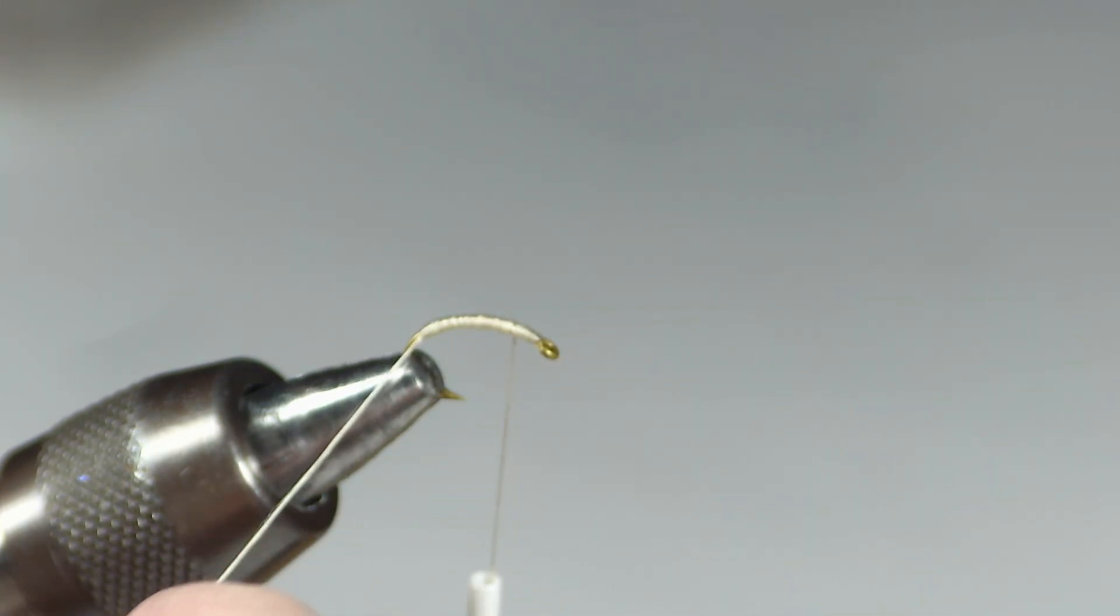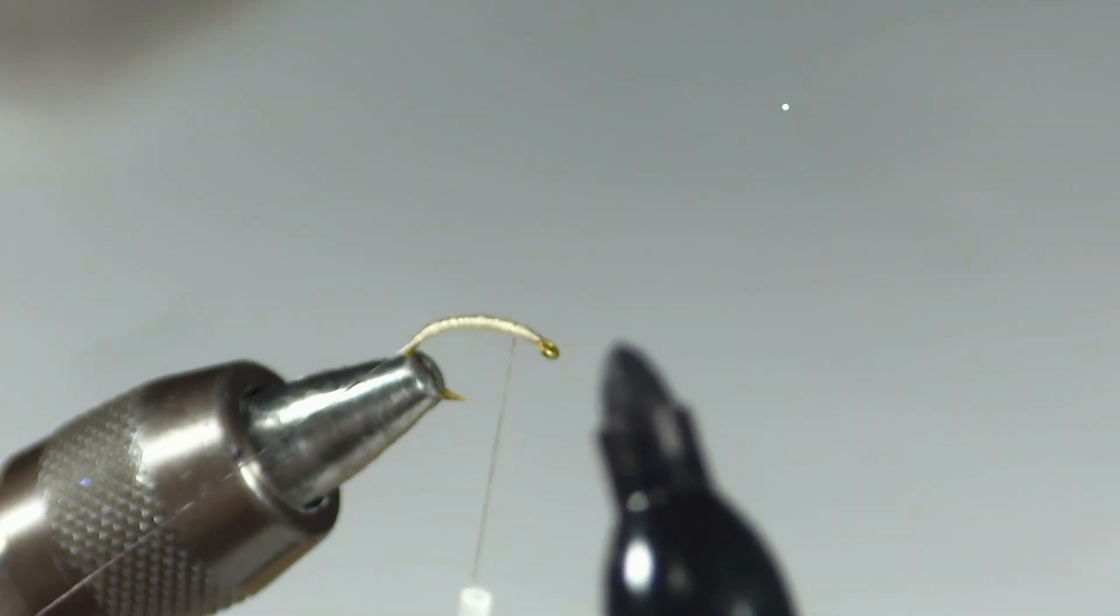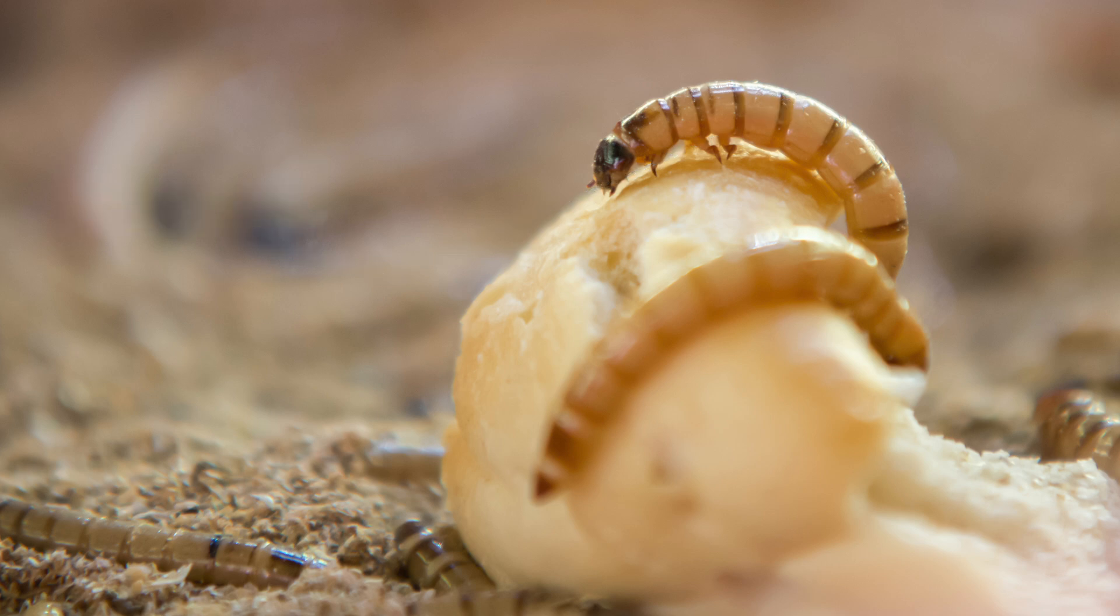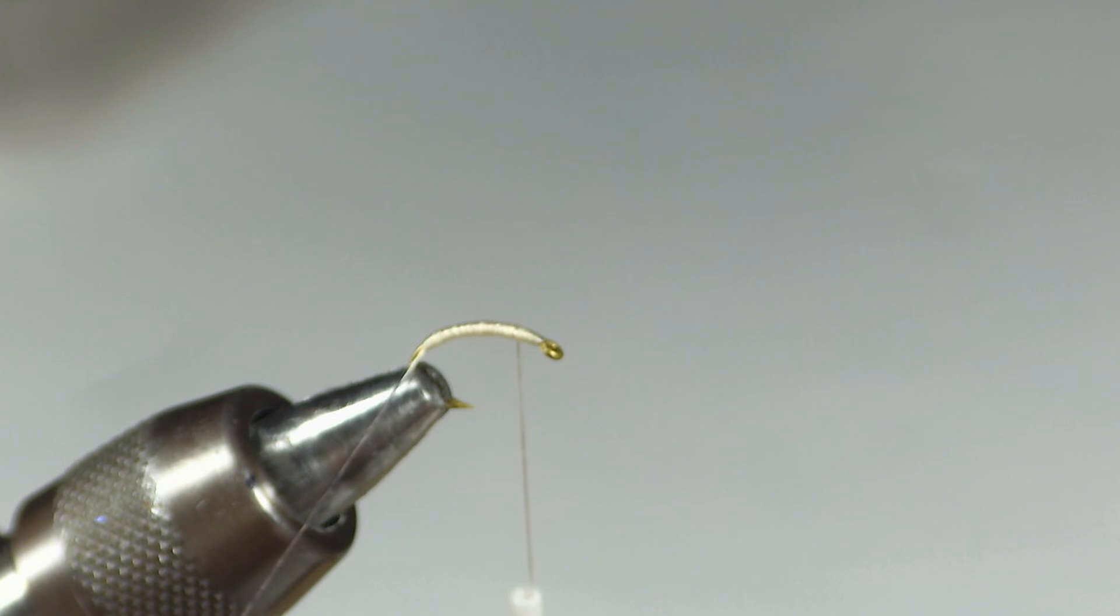Now midges also have ribbing. I'll show you a photo of a waxworm. You can see in the photo of the waxworm these little segments, which is what we're trying to imitate with this.